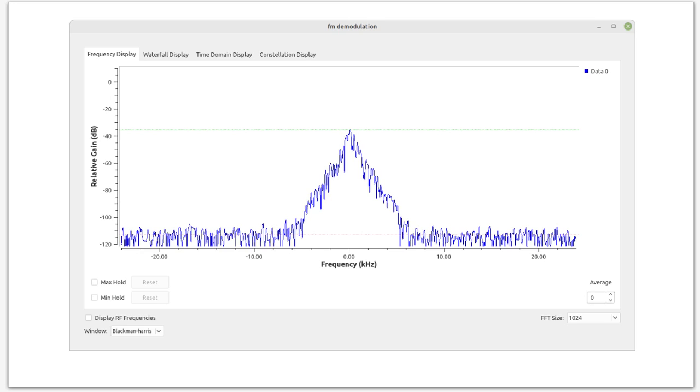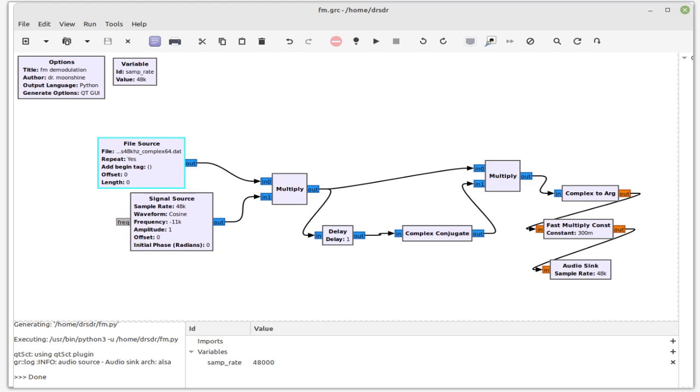Now we can do the FM demodulation. And that's what we have going on here. So after we multiplied it by the negative 11 kilohertz complex phasor, we then are running this signal through that polar discriminator.